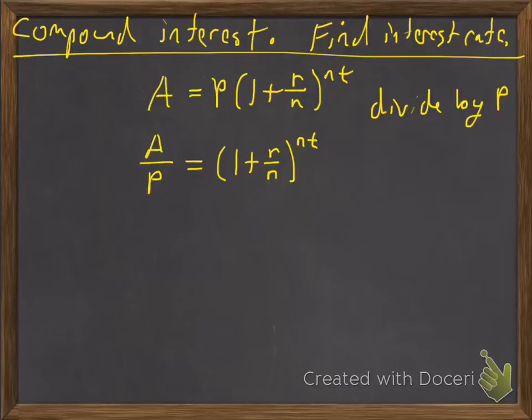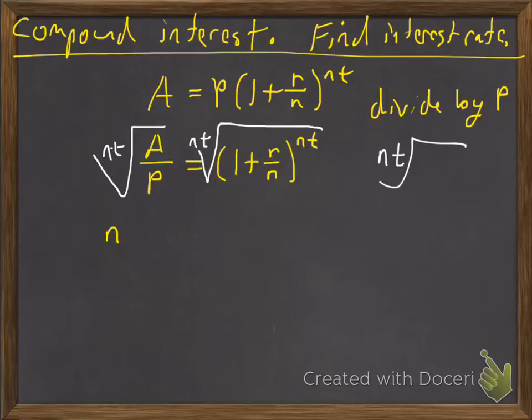And we'll know what nt is, it could be like 2. So if it was 2 we would take the square root of both sides. If it was cubed, we'd take the cube root of both sides. Well, we don't know what it is but we'll take the nth root of both sides. So the nth root of A over P and the root and the exponent will undo each other and we'll have 1 plus r over n.